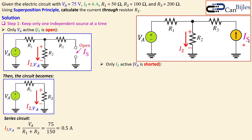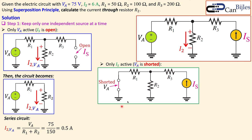Now going to the second part: we will activate the current source and disable Va. The voltage source Va is a short circuit, so this circuit is then produced for this action. We can see that R1 and R2 are now effectively in parallel, and R3 is in series with the current source. The current source defines the current in this branch, and at node X it splits — part of Is goes through R2 and the other part goes through R1. This is the current we'd like to calculate due to Is.